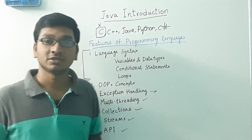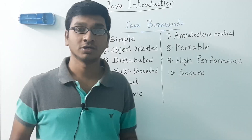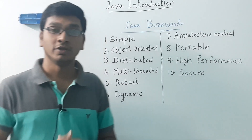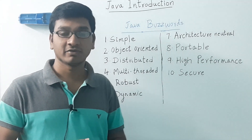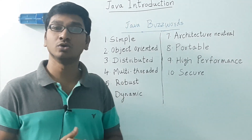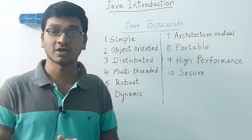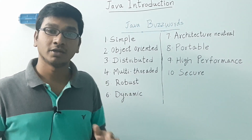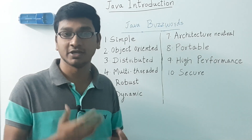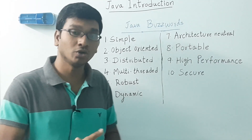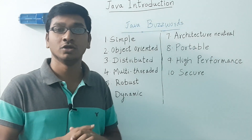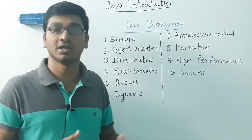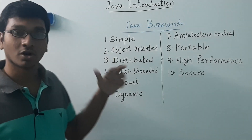Now let us understand Java buzzwords. First: simple. If you already know C++ language, it becomes easy for you to learn Java as it follows almost the same syntax and the look and feel will be very similar. And even if you don't know C++, that's also fine — you don't need extensive programming training. You can easily learn Java. That's why it's called simple.